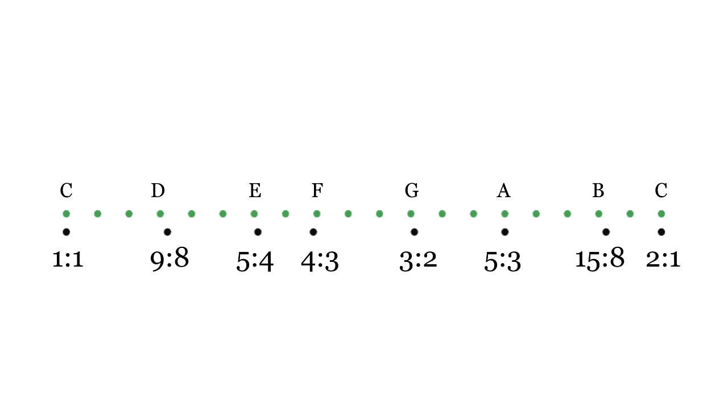The major scale has consistent sizes for its whole steps and half steps, just like in 12-tet. Notice that any major interval is one step larger than the same minor interval. For example, a major third is 6 steps, and a minor third is 5. This fact tells us how accidentals should work.